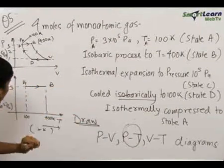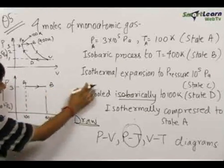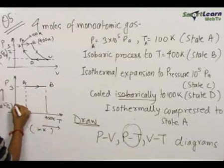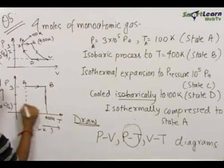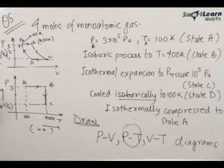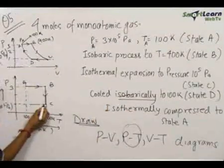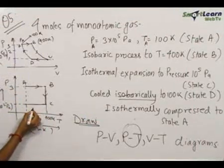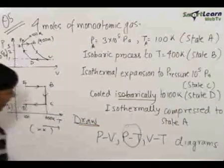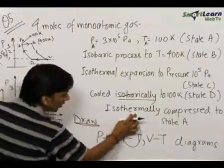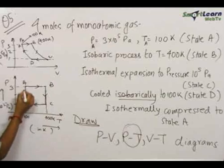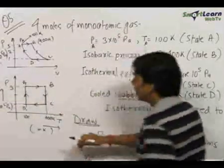From B it undergoes isothermal expansion to a pressure of 10⁵ Pascals. Since it is isothermal, the temperature is constant, so on the PT diagram this is a vertical line dropping from 3×10⁵ Pa down to 10⁵ Pa at constant temperature 400 K — this is point C. Then from C it is cooled isobarically to 100 Kelvin, so constant pressure with temperature reducing to 100 K — this is state D. Finally, D is brought isothermally back to A; since D and A are at the same temperature, this is a vertical line on the PT diagram back to state A.